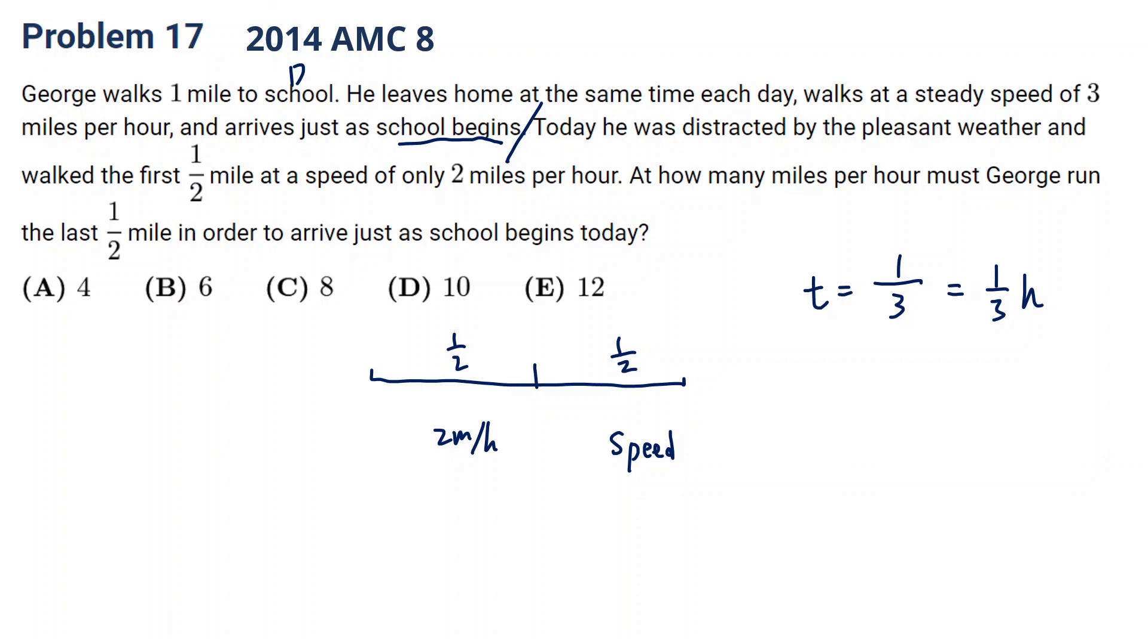And today he was distracted. So the first journey, first half journey, distance is half mile, time, he already used one-fourth hour. That means for the rest of the journey, he only has one-third minus one-fourth, that is one-twelfth hour. This is the time. And we are looking for the speed. Speed equals distance divided by time. Here the distance for the rest of the journey is half a mile, and the time is one-twelfth hour. So one-half divided by one-twelfth is six miles per hour.